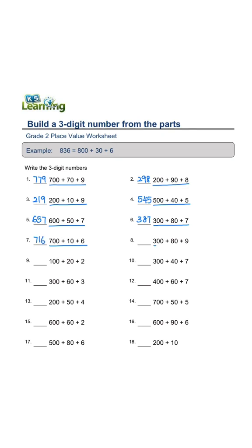300 plus 80 plus 9 equals 389. 100 plus 20 plus 2 equals 122. 300 plus 40 plus 7 equals 347.